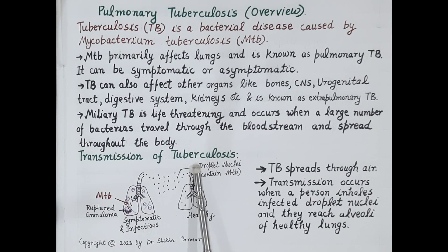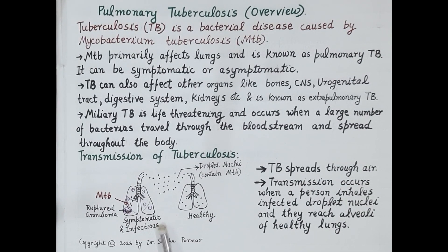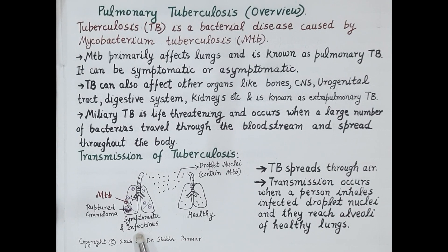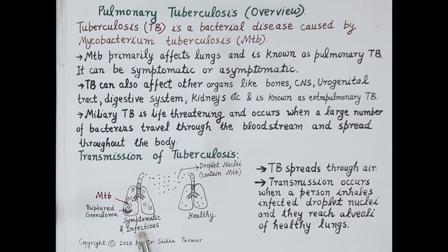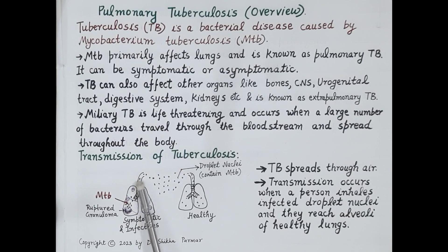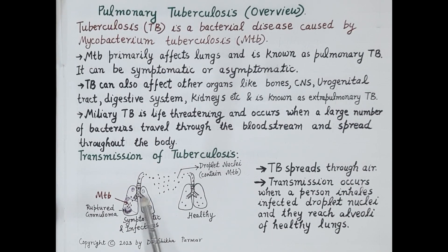Now let's study the transmission of tuberculosis. Tuberculosis is a communicable disease as it spreads from one person to another. Tuberculosis is an airborne disease and it spreads through the air. When an infected sick person with pulmonary tuberculosis — showing symptoms — coughs, sneezes, shouts or talks, droplets of mucus or saliva carrying Mycobacterium tuberculosis are expelled into the air.